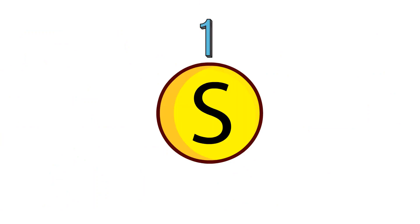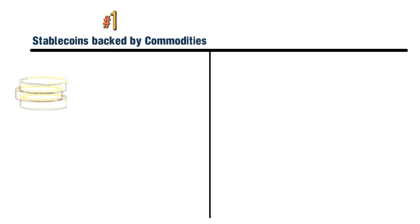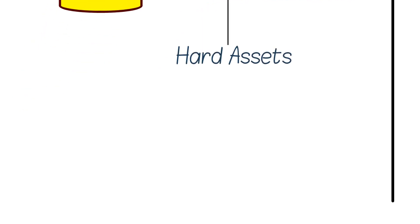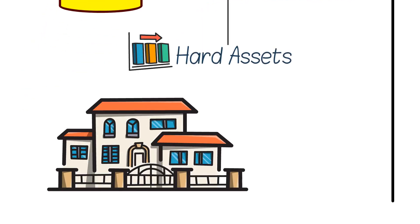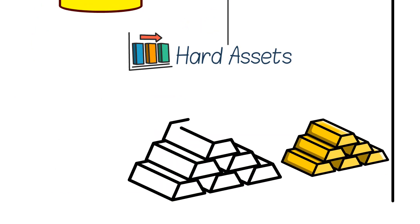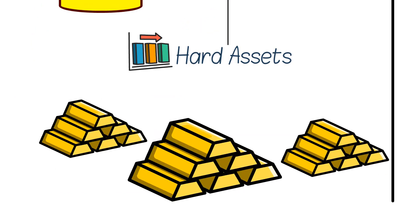If we get a little nerdier on this, we can break down stablecoins into three popular categories. Number one: stablecoins backed by commodities. These are coins secured against commodities and generally have the backing of hard assets for stability. These hard assets can include real estate or gold — however, the most commonly used hard asset is gold.